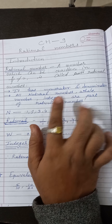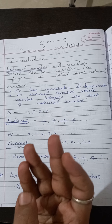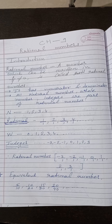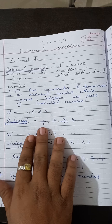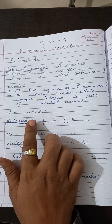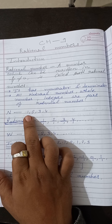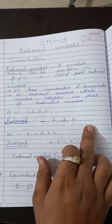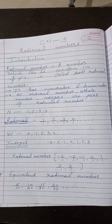All natural numbers, whole numbers, and integers are part of rational numbers. Natural numbers 1, 2, 3, 4 are called rational numbers because they can be written in the p by q form. For example, 1 can be written as 1/1, 2 as 2/1 — these are all rational numbers.